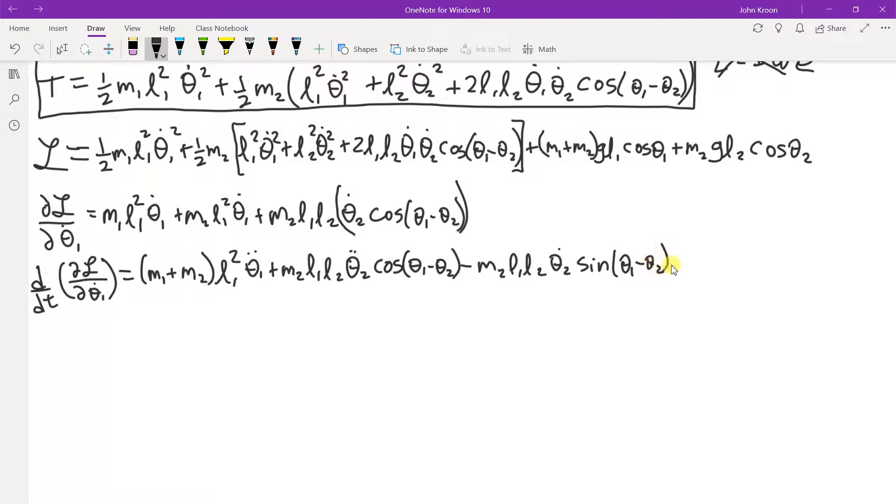Cosine theta 1 minus theta 2, minus M2 L1 L2 theta 2 dot, sin theta 1 minus theta 2, times theta 1 dot minus theta 2 dot. Whew, there we go.